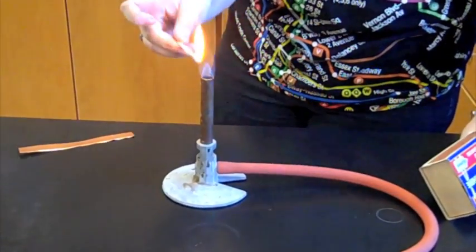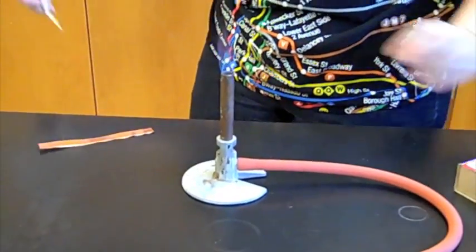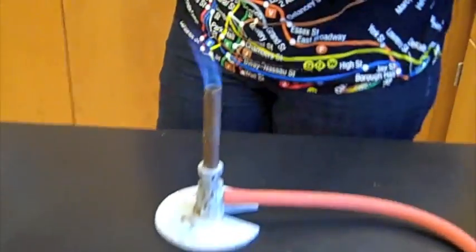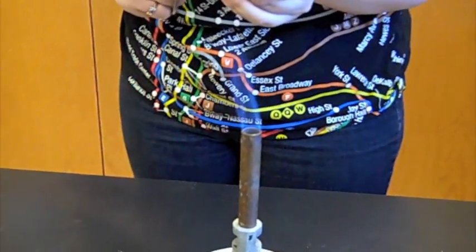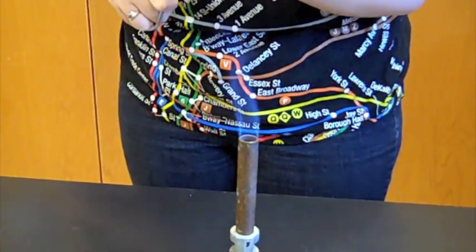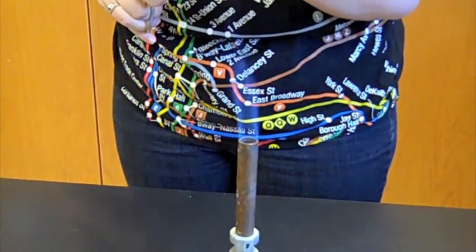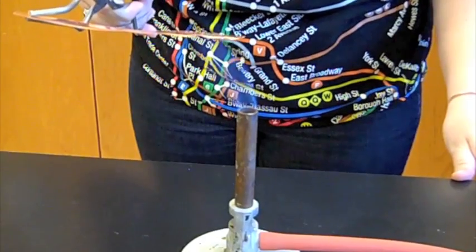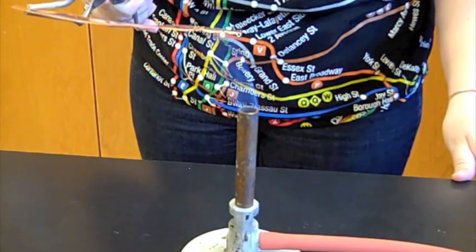We are using a Bunsen burner to heat the piece of copper. As the copper heats up, its particles are gaining kinetic energy. This means that the copper is increasing temperature, which is the measure of particles' average kinetic energy.